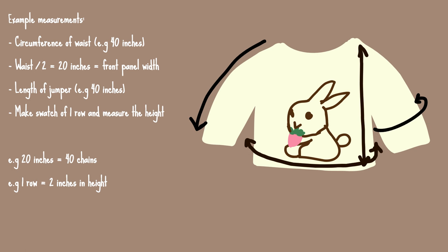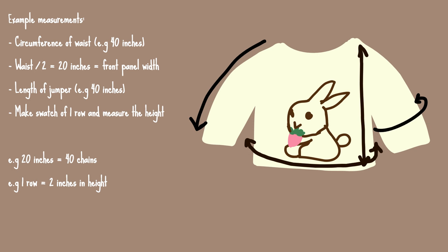Apply this based on your own measurements. First, measure the circumference of your waist — the example measurement I've got is 40 inches. Then measure the length you want the jumper to be, from about the collarbone downwards — let's say 40 inches as well. Take your waist measurement, divide it by two, which gives 20 inches, so the front panel is going to be 20 inches across. Make a chain that equals 20 inches, and it's very important that it's an even number, otherwise it'll be difficult to place the graph exactly in the middle.